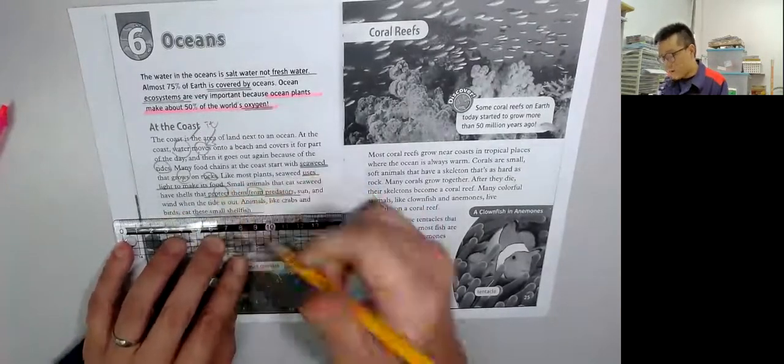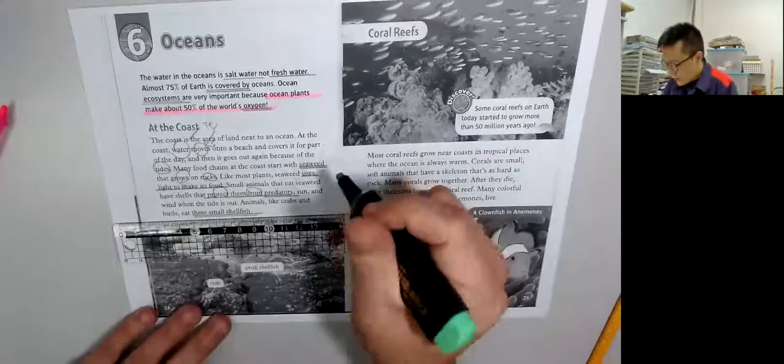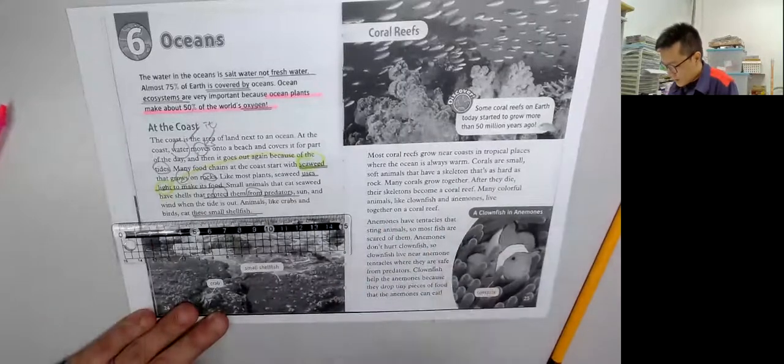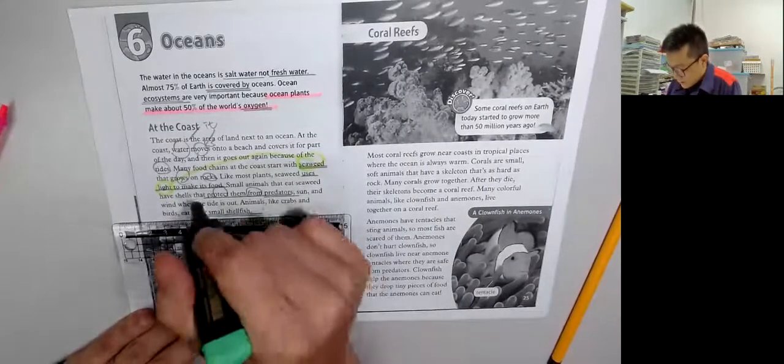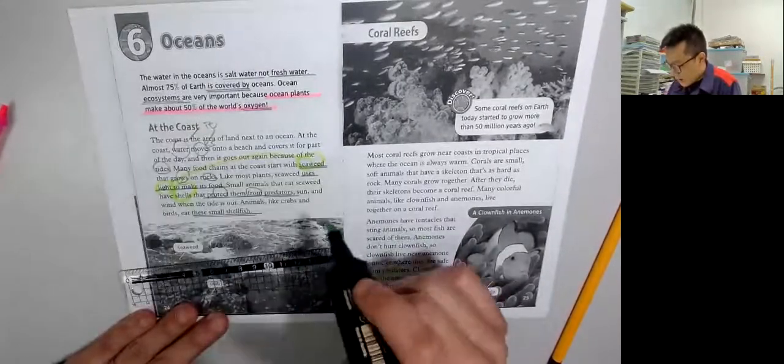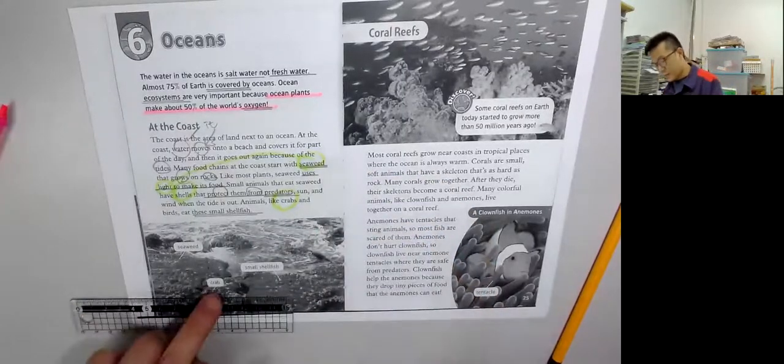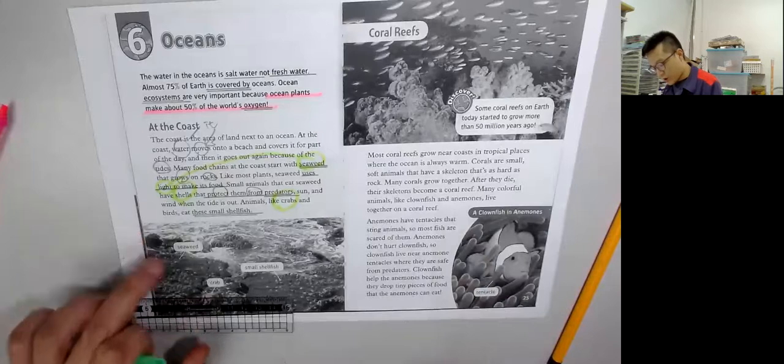Animals like crabs and birds eat these small shellfish. 首先seaweed就吃光, 跟著有shell的就會吃牠, 就會出現到crabs. Small shellfish就吃seaweed, 然後crab就會吃牠, 你會見到連鎖反應.